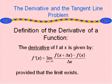The definition of the derivative of a function is given by the following limit: f prime of x equals the limit as delta x approaches 0 of the difference quotient — f of x plus delta x minus f of x, all over delta x — provided that this limit exists.